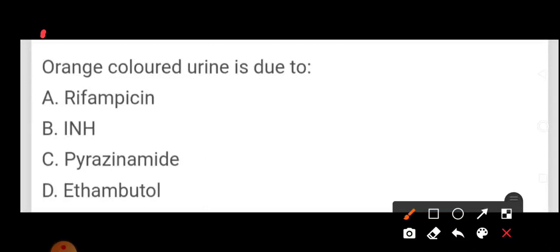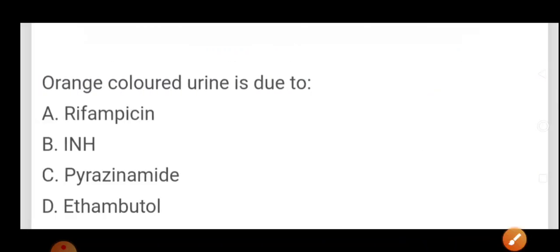E for ethambutol, E for eye, causes eye toxicity. Pyrazinamide causes gout-like symptoms and uric acid. Isoniazid causes pyridoxine deficiency and peripheral neuropathy. Rifampicin causes orange color of urine.